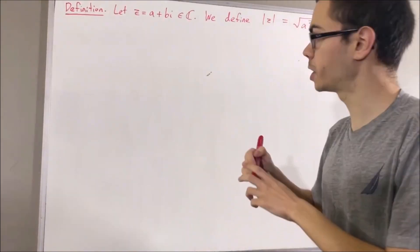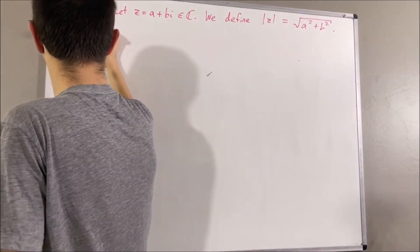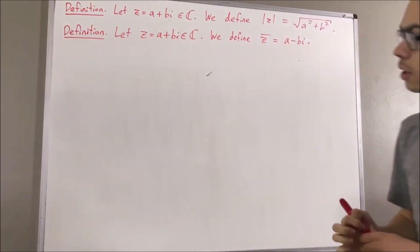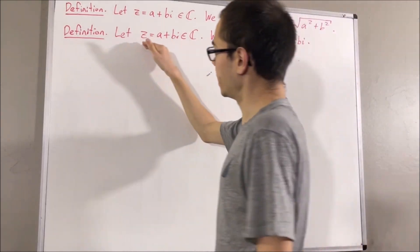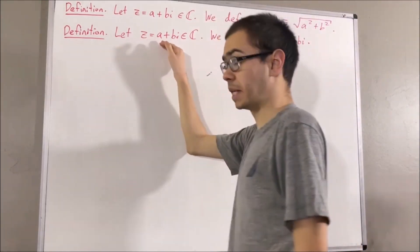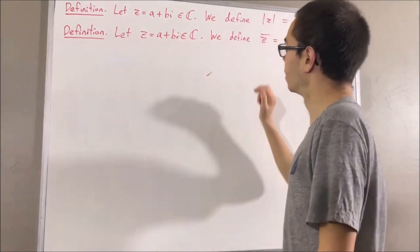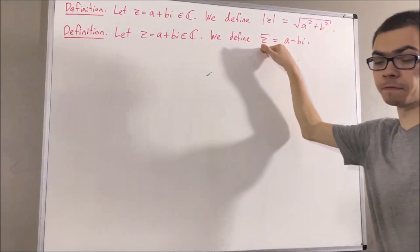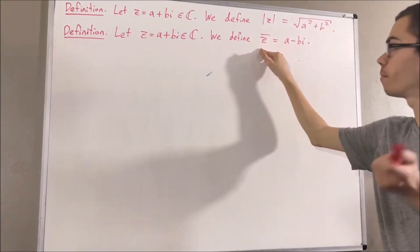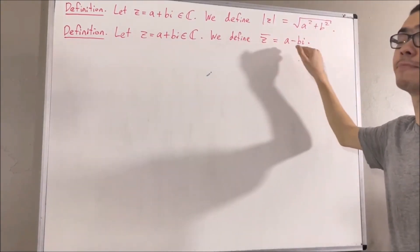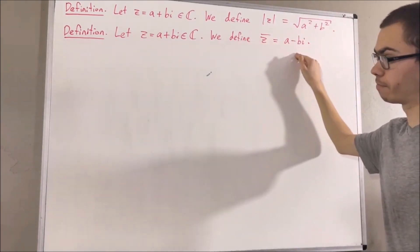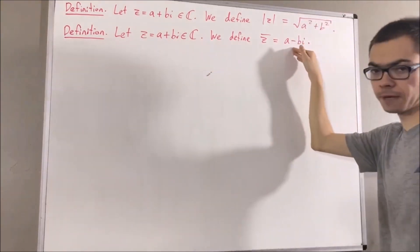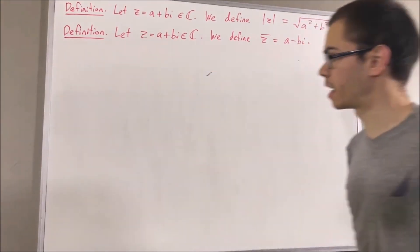Next we have another definition. Let z equal a plus bi be a complex number. We define the conjugate of z, or z bar, to be a minus bi. So you just switch the plus sign to a minus sign, and that is it.